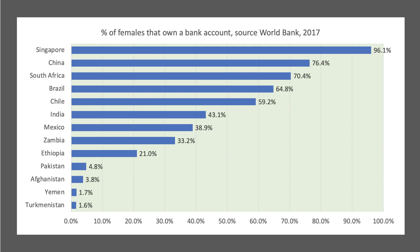If you look at access to basic financial services — a bank account, access to credit, ability to take out insurance — these are essential steps in financial inclusion. And across the world there are deep divides. This chart shows the percentage of women in the world in 2017 who have a bank account: 97% in Singapore, 20% in Ethiopia, less than 2% in Yemen and Turkmenistan. So access to financial services and bank accounts in many of the least developed countries, those with the highest extreme poverty, clearly remains a structural problem and a big barrier to development.